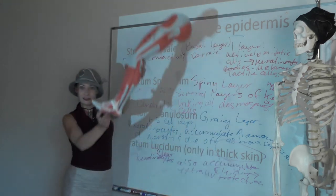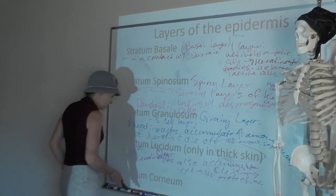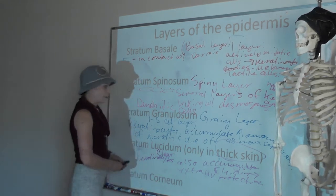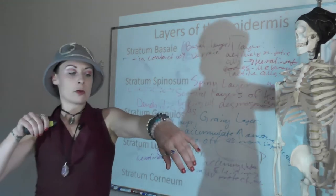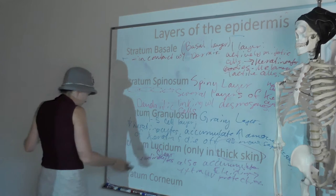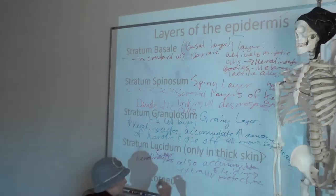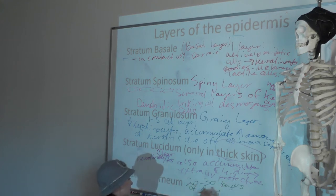Your most superficial layer is your stratum corneum — that's 20 to 30 layers of dead keratinocytes. They are really flattening out and looking squamous, which is what makes this a stratified squamous epithelial tissue. Its big job is to be readily sloughed off.